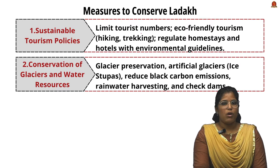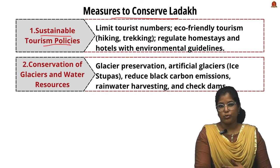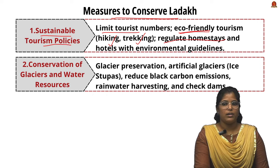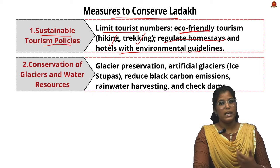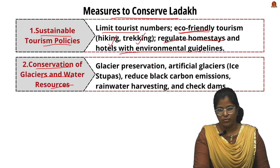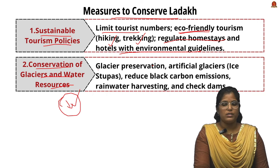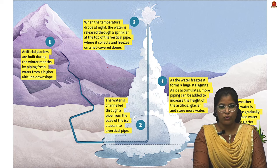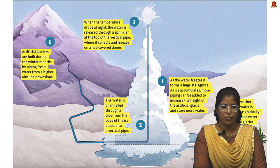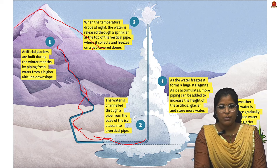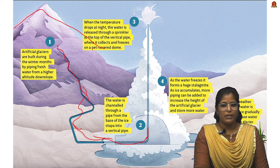To conserve Ladakh, first we need sustainable tourism policies — limiting tourist numbers, promoting eco-friendly tourism like hiking and trekking, and regulating homestays and hostels with environmental guidelines to reduce deforestation. Second, we must conserve glaciers and water resources. Glacier preservation can be done through artificial glaciers called ice stupas. Water is pumped through a pipeline from uphill; during cold nights it is sprayed at low temperatures to build ice mounds.